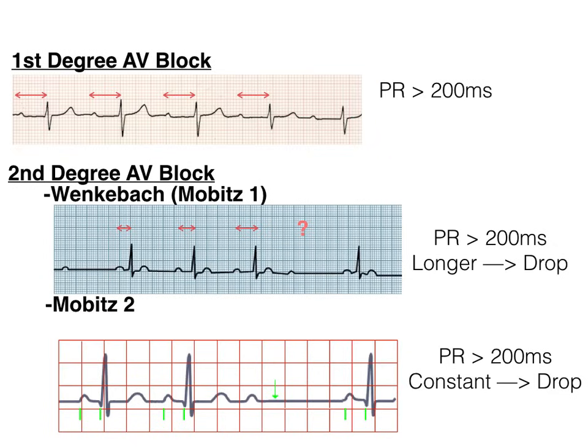You can think of a Mobitz type 2 as almost like a first-degree AV block that has a dropped beat in it, because the PR interval is still greater than 200 milliseconds and still constant, but somewhere downstream you drop a beat. In the example, the green down arrow shows where a QRS complex should be but the beat is dropped, while the PR interval is still lengthened as shown by the green ticks. So again: Wenckebach gives you warning — longer, longer, longer, drop. Mobitz type 2 is just a prolonged PR interval that drops a beat.